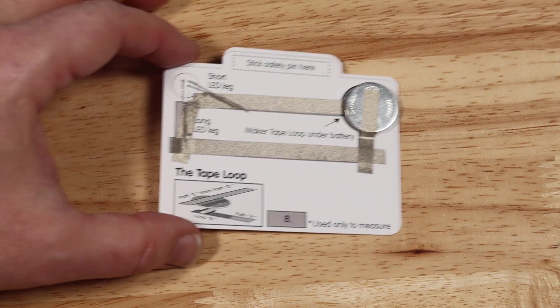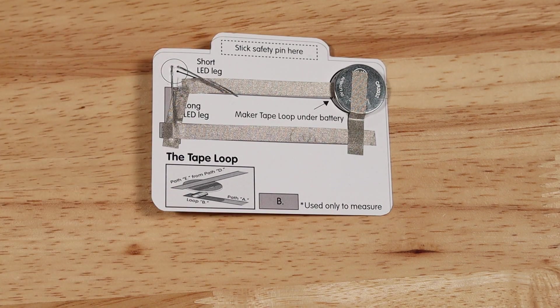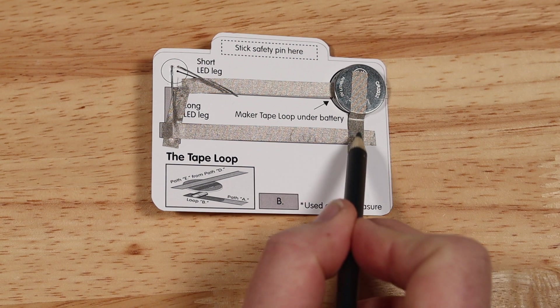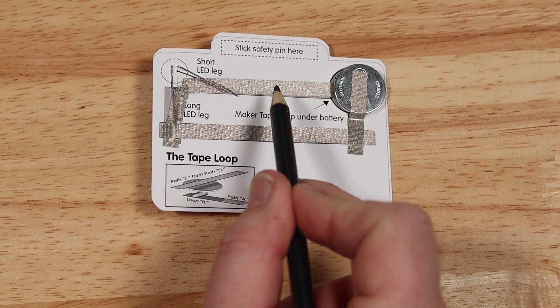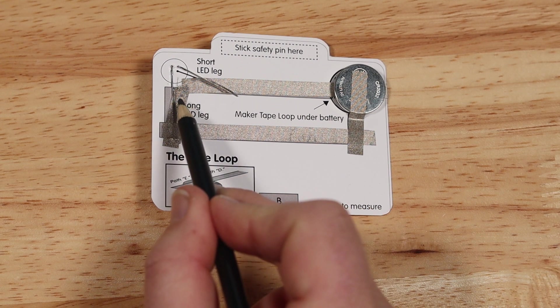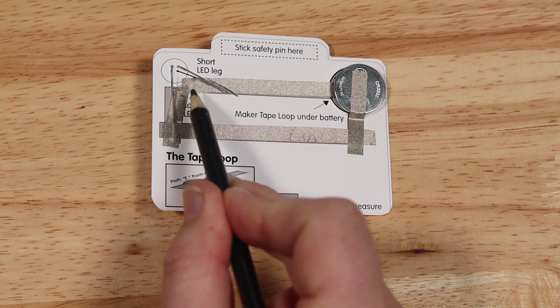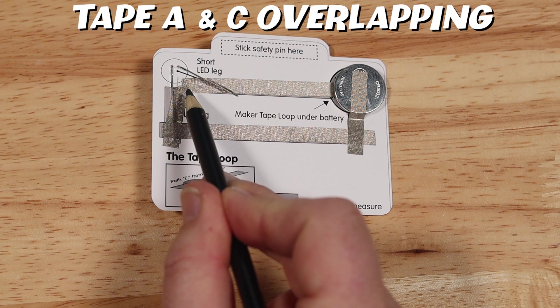Here's another example of a name tag that's not working. We can see we have some good connections with the maker tape overlapping. Up here, this piece covers the short LED leg. The other covers the long LED leg. But you can see those two pieces actually touch.